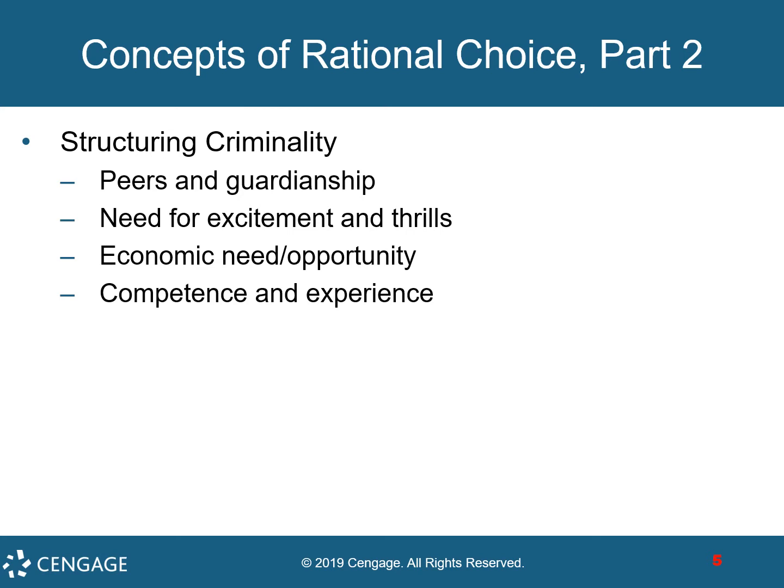Structuring criminality involves considering personal factors and conditions prior to crime. Peer influence and guardianship play a role — effective monitoring by parents reduces the likelihood that children will commit crime, and gender differences in crime may be explained by levels of guardianship and peer influence. Criminals sometimes feel a compulsion for excitement and thrills, or an economic need, though the reality is that crime pays less than criminals believe, and they generally lack the confidence and experience to carry out crime successfully.